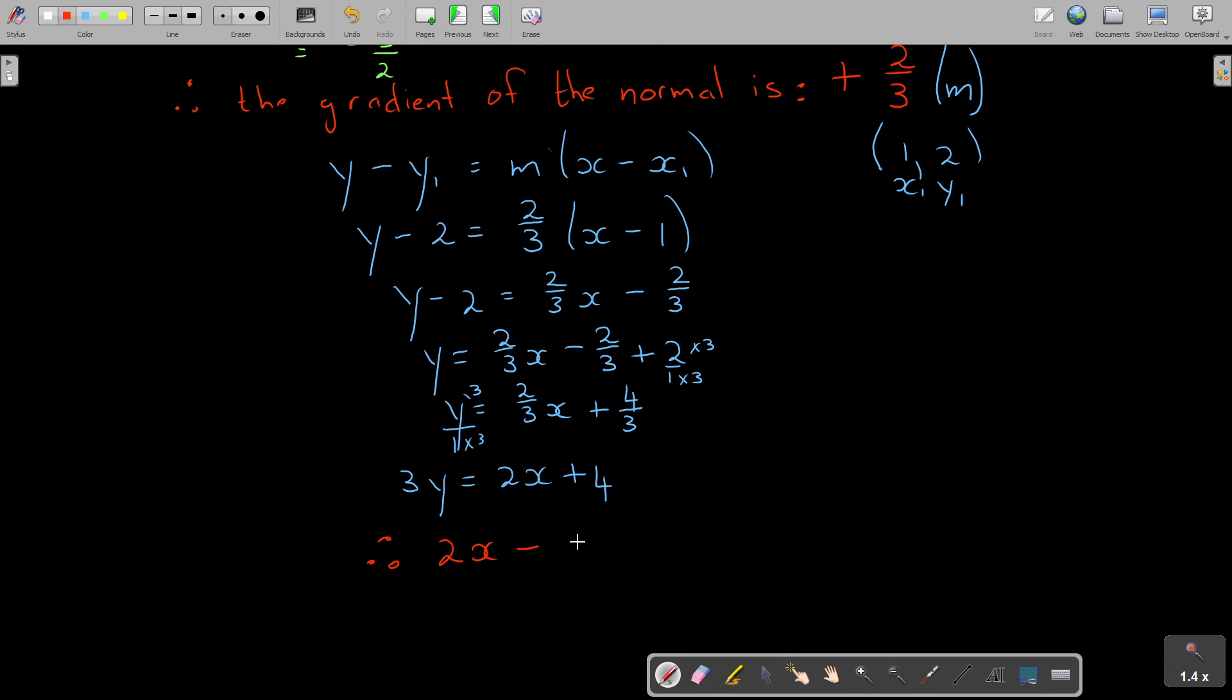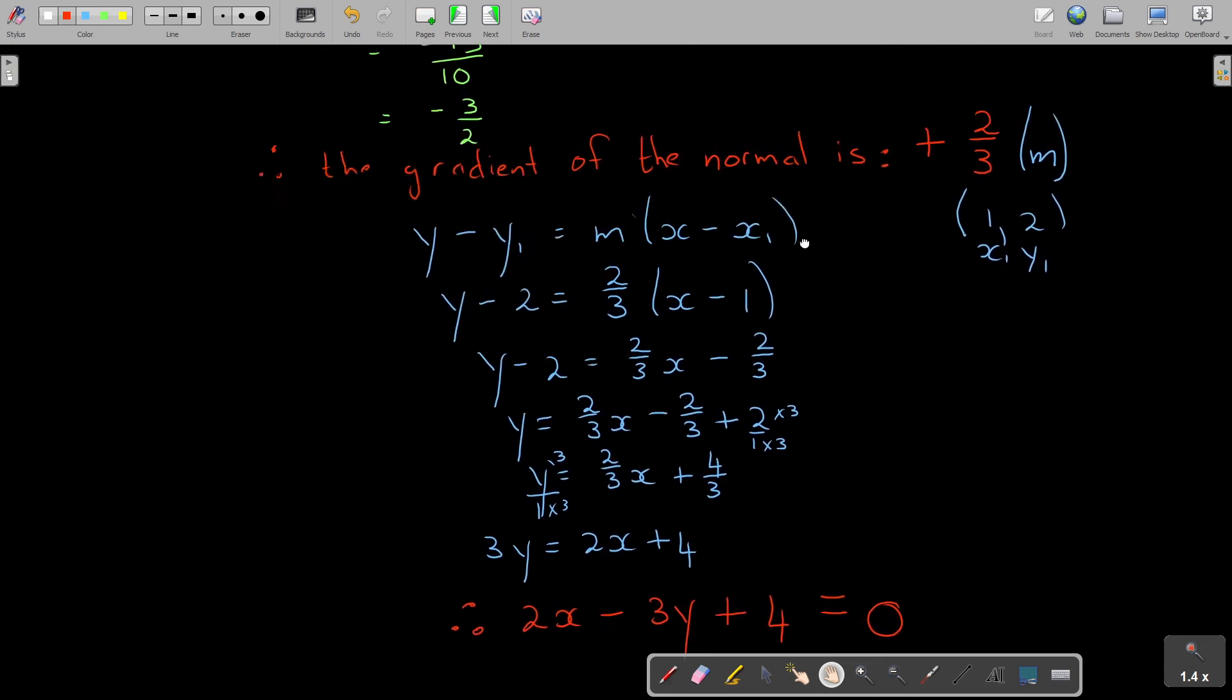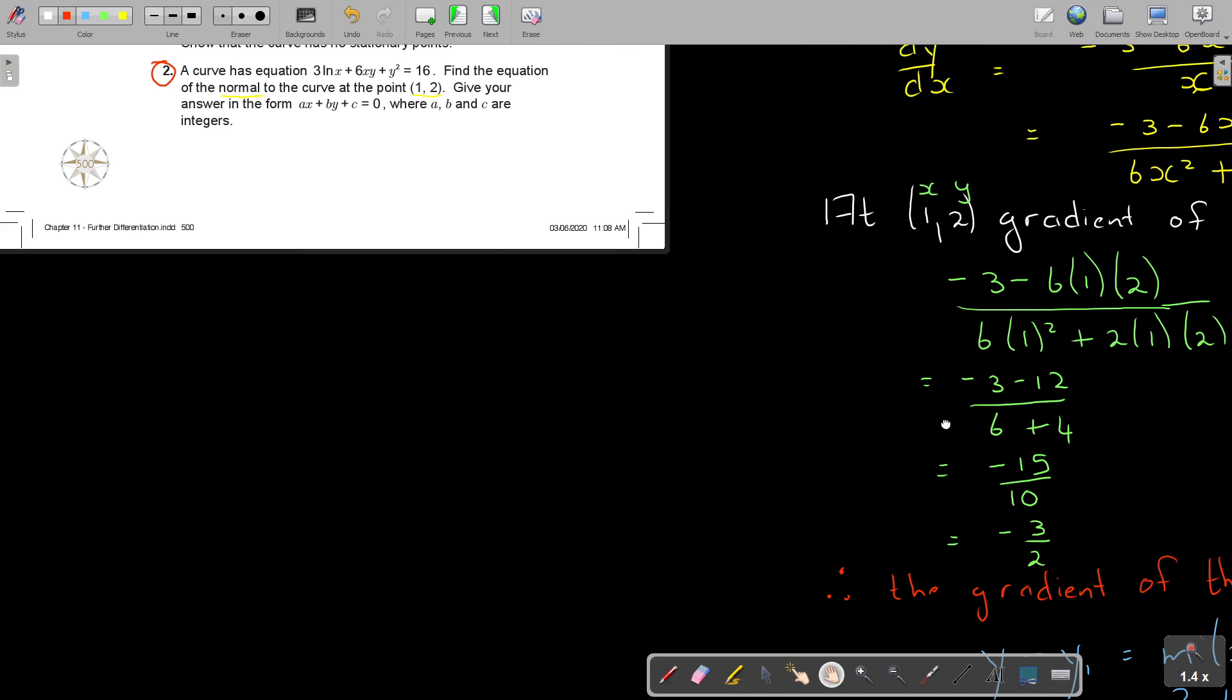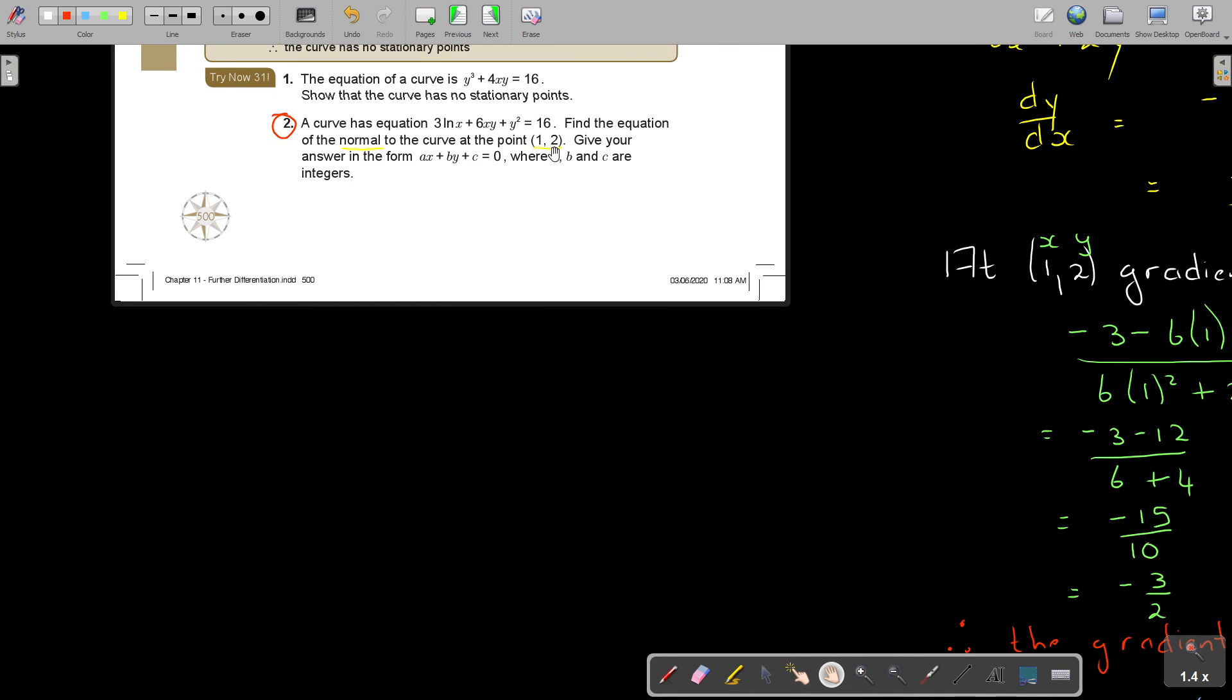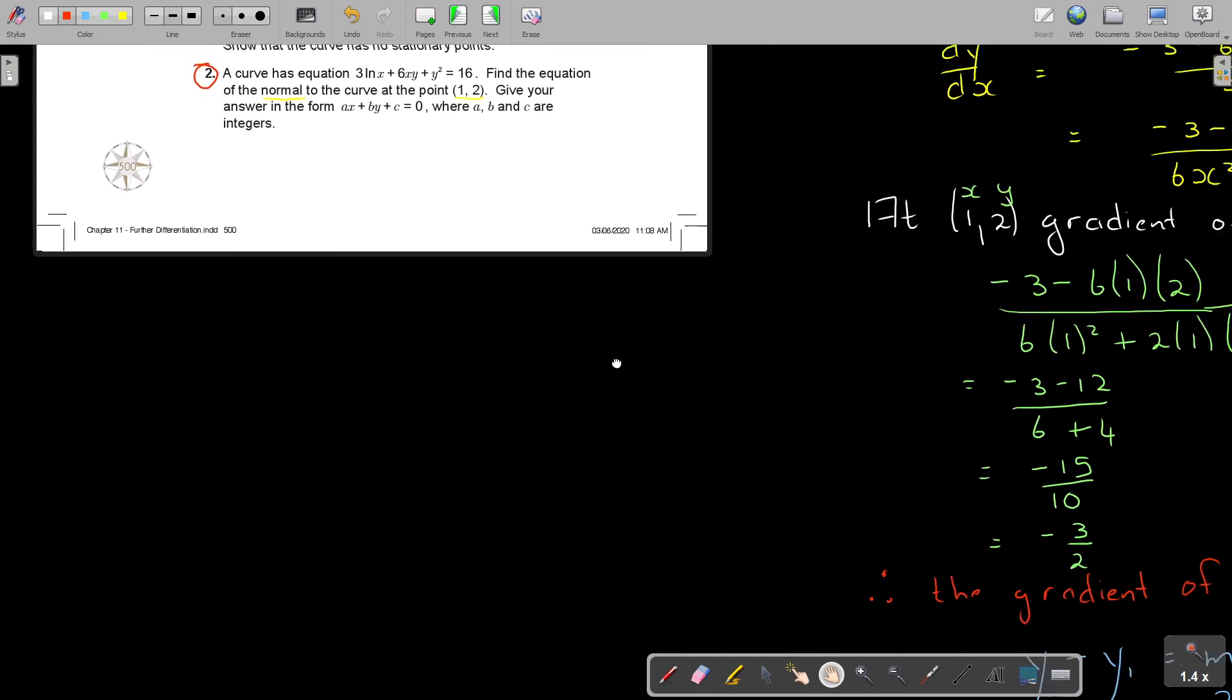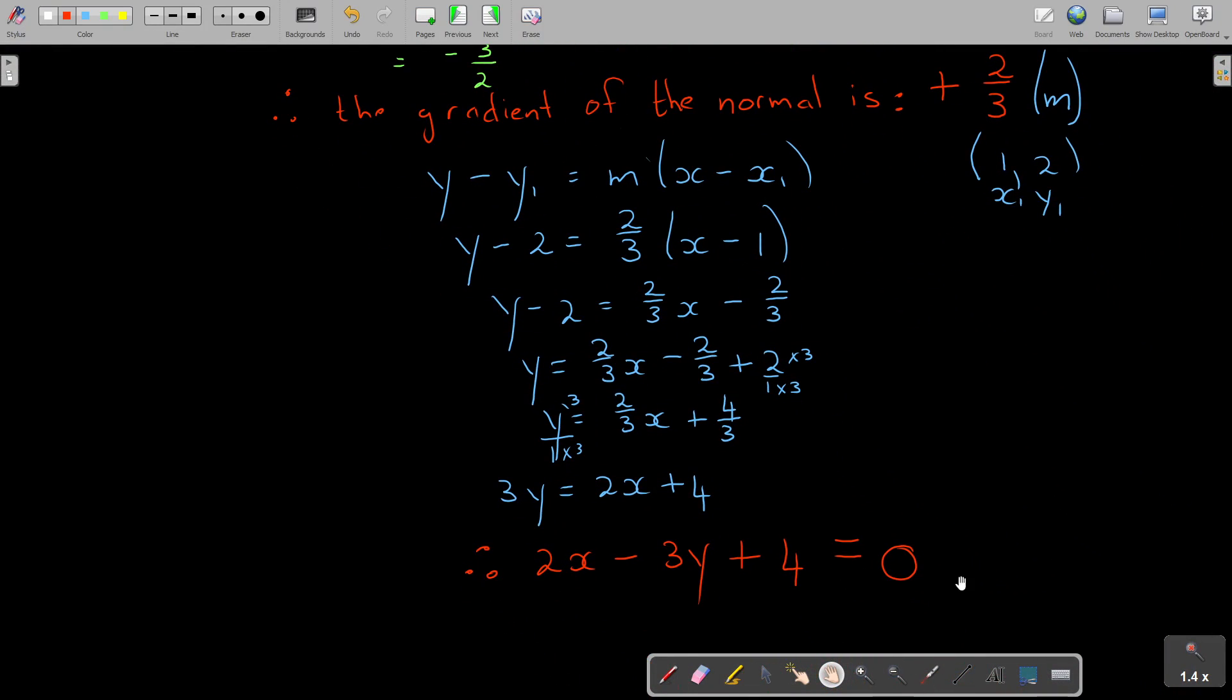Therefore, 2x minus 3y plus 4 equals 0. That is going to be your final answer. Always read your question again when you're finished to see if you answered correctly. Give your answer in the form ax plus by plus c equals 0, where a, b, c are integers. That's basically what I did in the final answer. That's how you do it. Thank you.